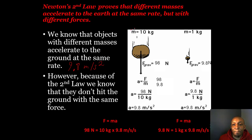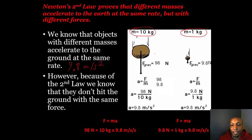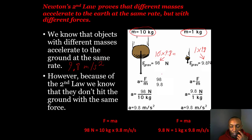We have a rock with a mass of 10 kilograms and a rock with a mass of 1 kilogram. The force of gravity on the 10 kg rock is 98 Newtons — because force equals mass times acceleration: 10 times 9.8 equals 98 Newtons. For the 1 kg rock: 1 times 9.8 equals 9.8 Newtons. To find acceleration, we divide force by mass: 98 divided by 10 gives us 9.8 m/s² for the first rock.